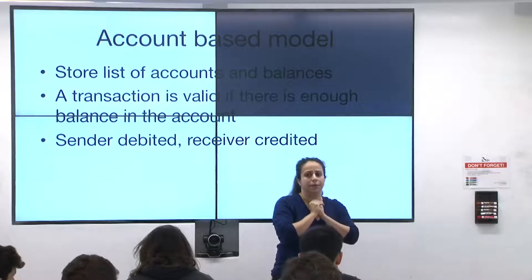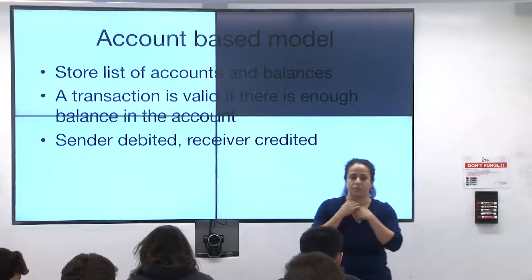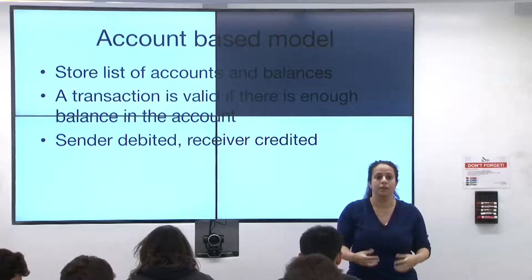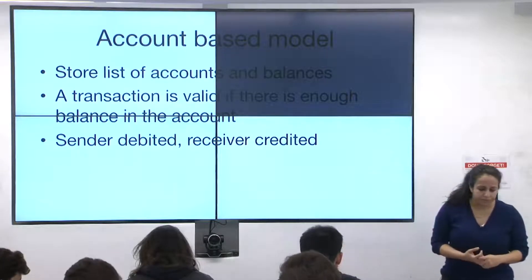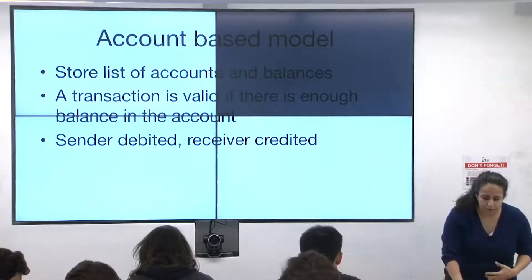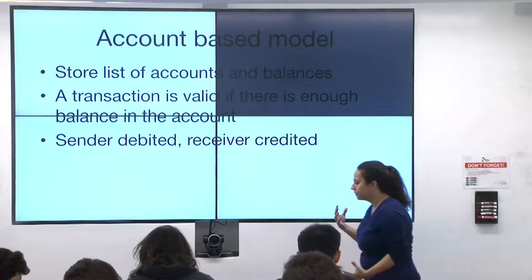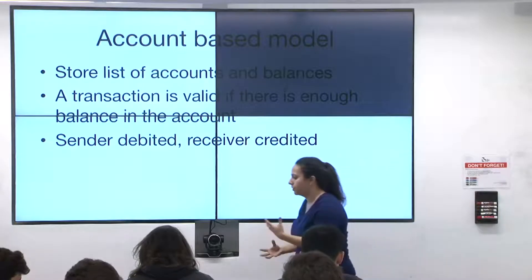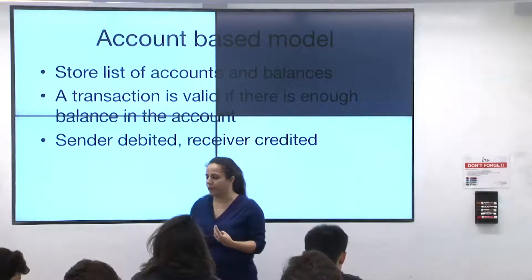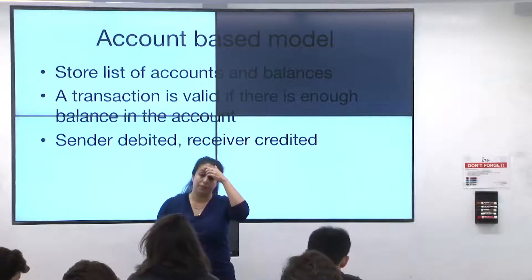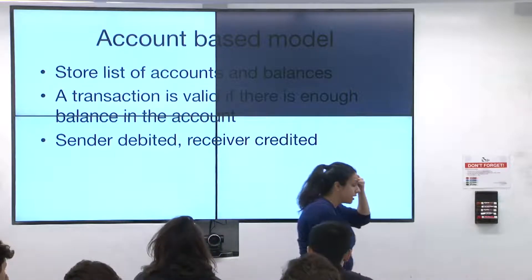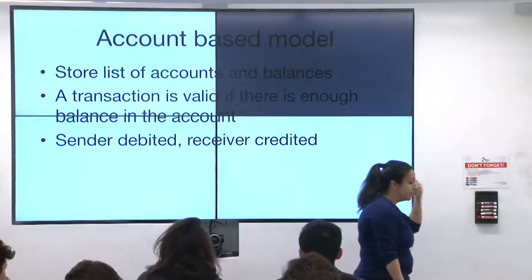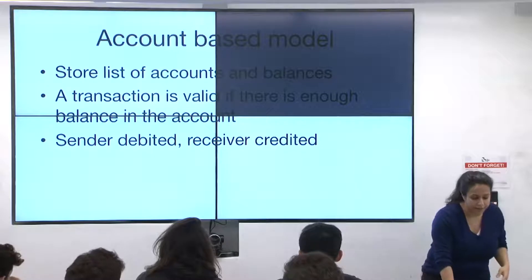To summarize the account-based model: you store a list of accounts and balances; a transaction is valid if there's sufficient balance; and when processed, you debit the sender and credit the receiver — very straightforward. This is the way Ethereum works. It's a bit more natural to think about, but it's not the way Bitcoin works. Bitcoin has a very different model of coins and transactions.